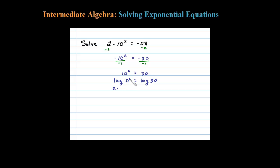So here we can say X times log of 10. Now we know log of 10 is 1, so that's really just X times 1 equals log of 30. And anything times 1 is itself.